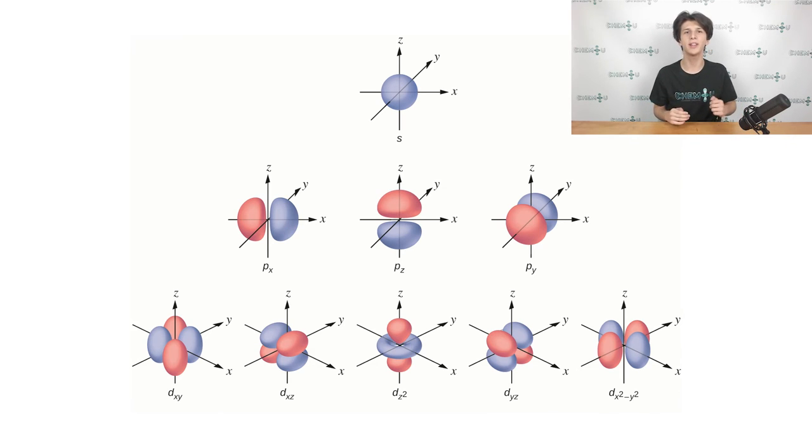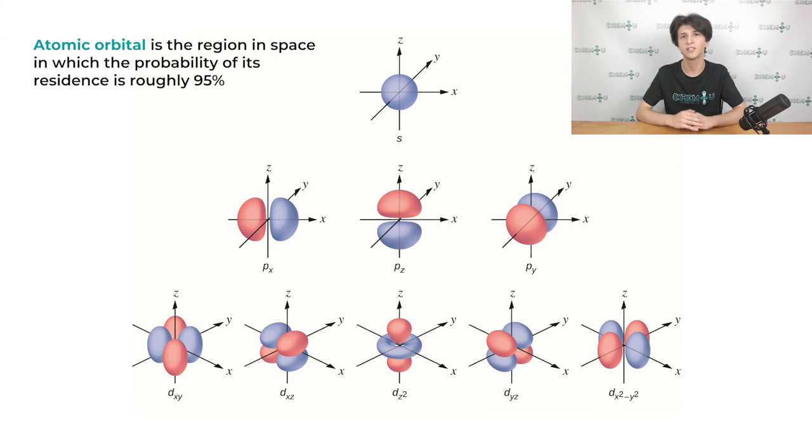This will give us something similar to the figure on the slide. This is one of the most widely accepted and simplest definitions of an atomic orbital. An atomic orbital is a region in the space around the nucleus in which the probability of the existence of an electron is roughly 95%. I hope everything is clear for you. If you have any doubts, feel free to rewind the video as we will be moving on to the next section.